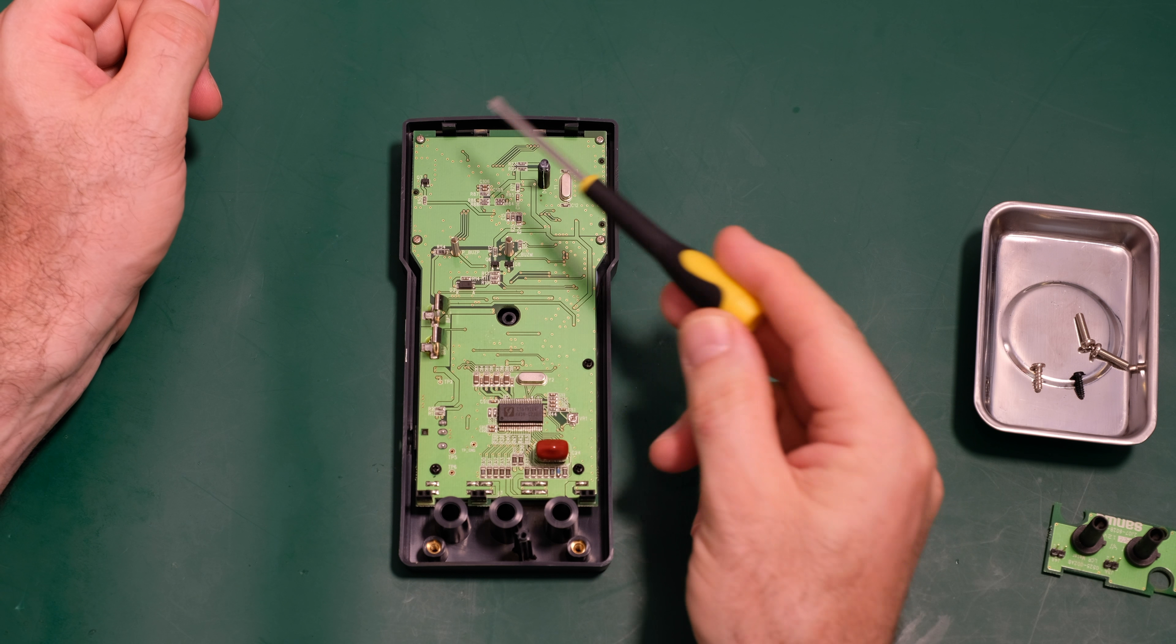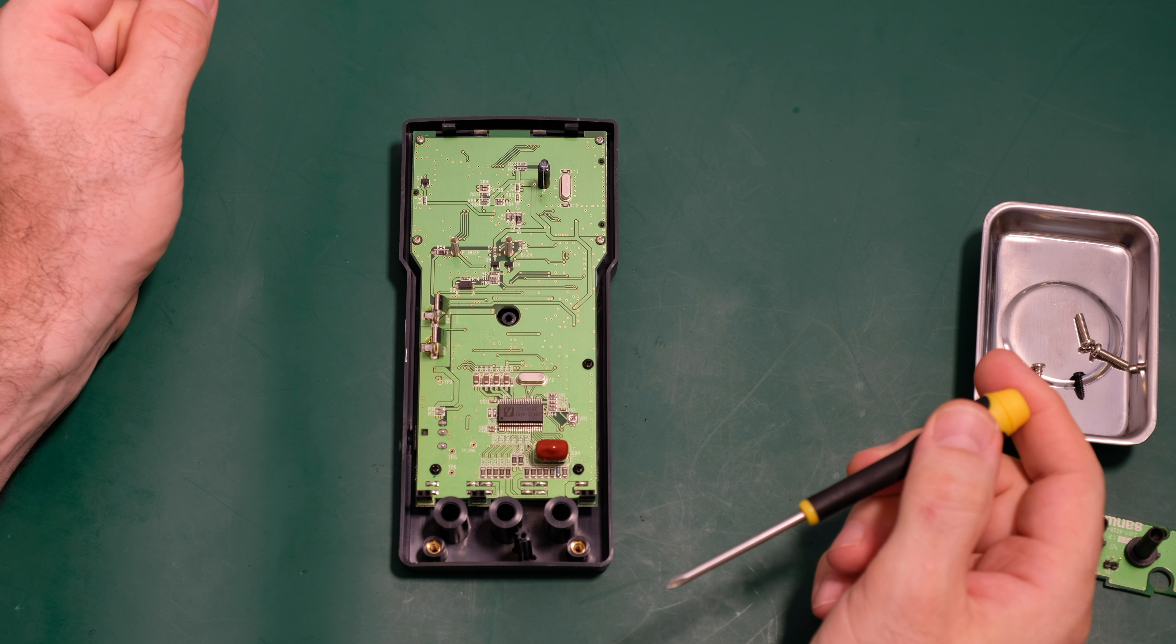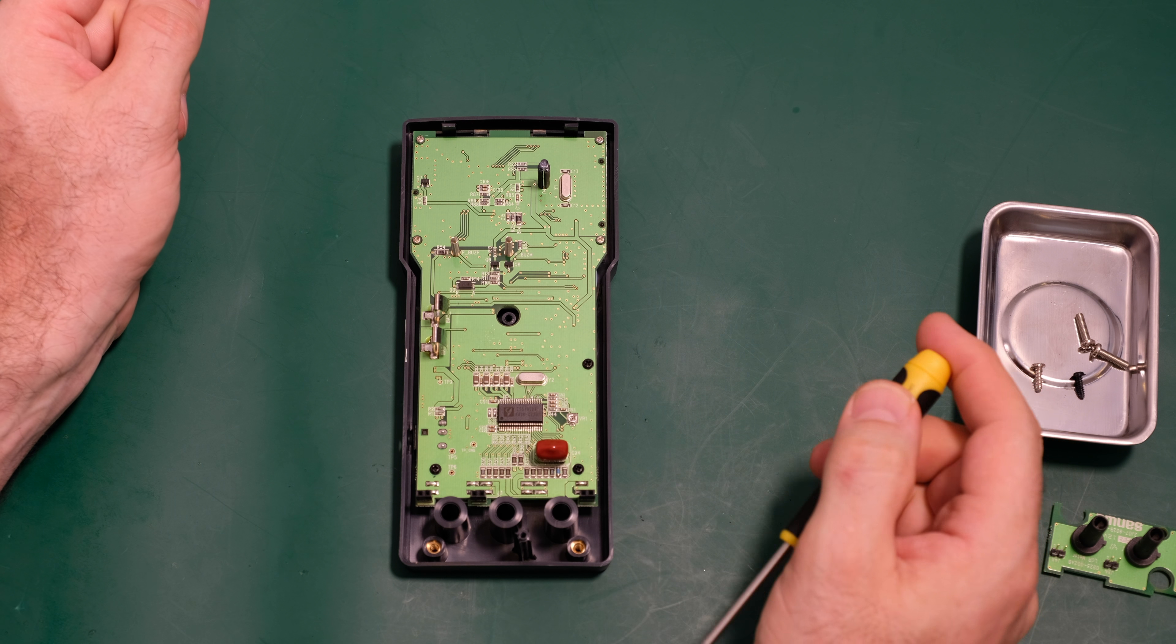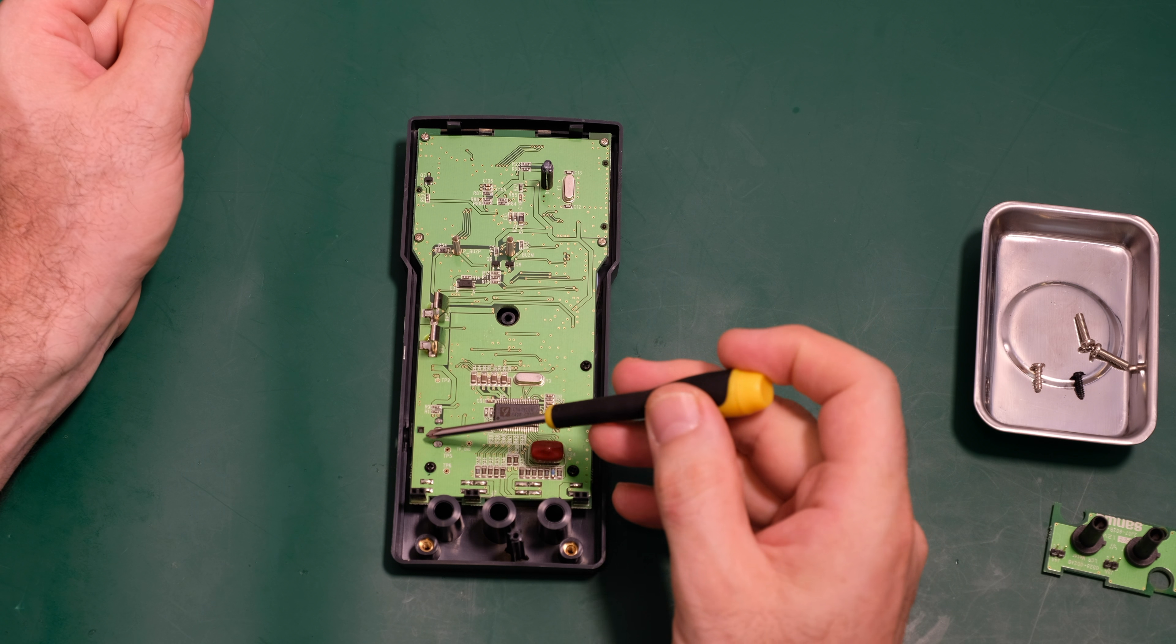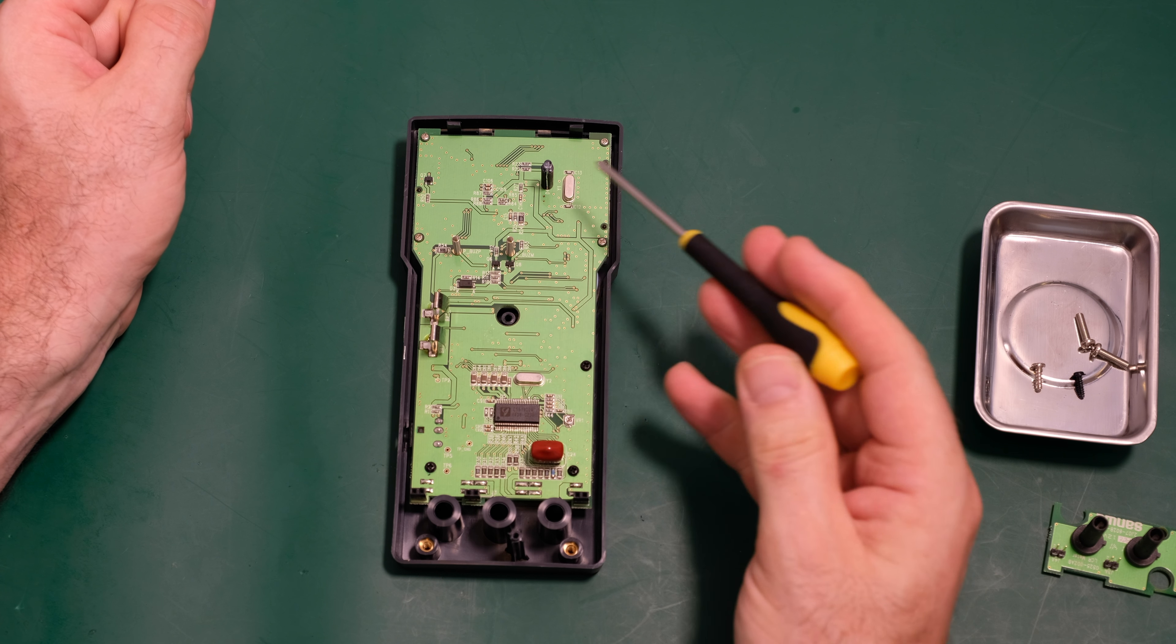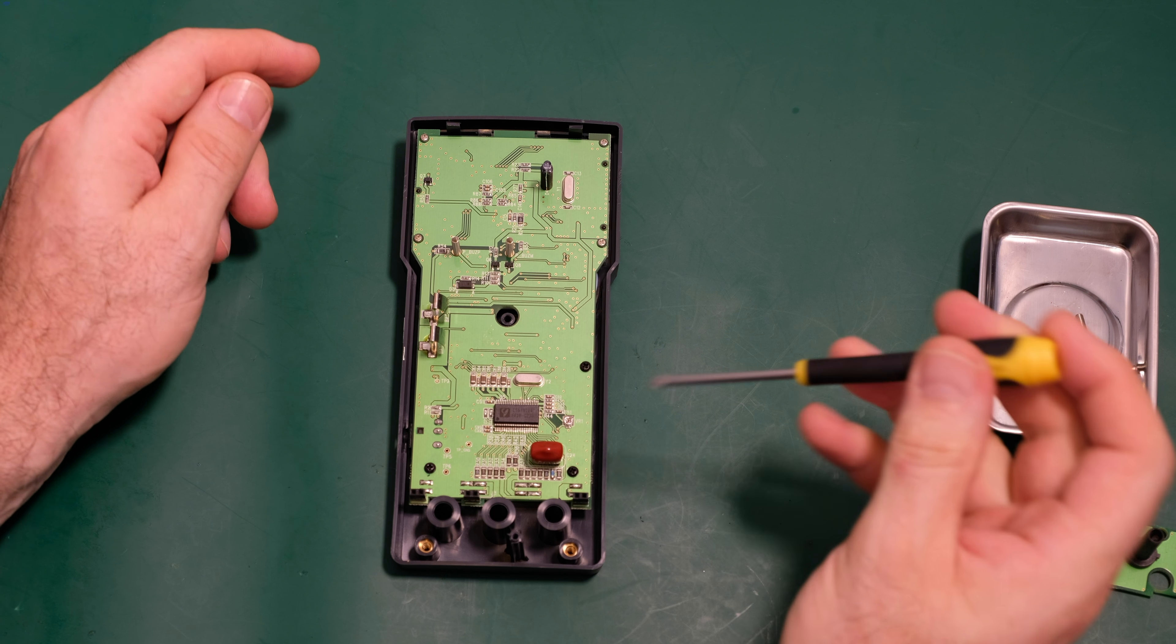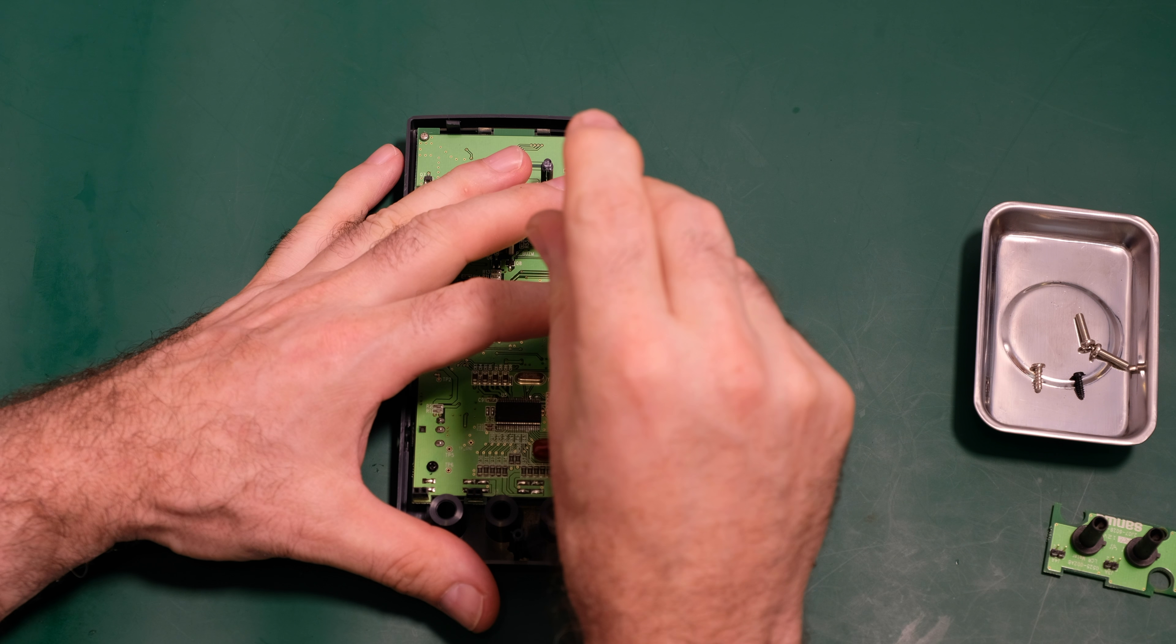So these four silver screws here, I'd imagine they're for the LCD screen, so I'll leave those alone. But the black screws are probably what's holding this board in place. So let's start with those.